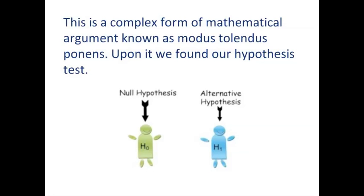Upon it we found our hypothesis. Modus tollendo ponens says that if it is A or B — one of two options — and it is not A, then it is B. Pretty clever, isn't it? I told you we were devilishly clever. What a tangled web we weave when first we practice modus tollendo ponens in our statistical hypothesis test. Keep in mind that we have only two possible outcomes — the null hypothesis or the alternate hypothesis. If we can reject one of them, then it leads us to accept the other one.